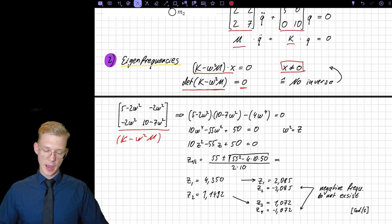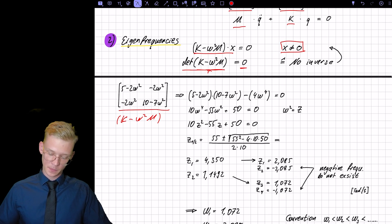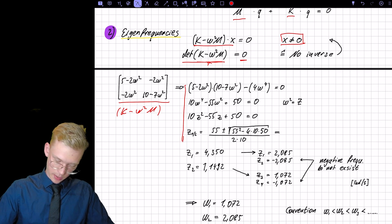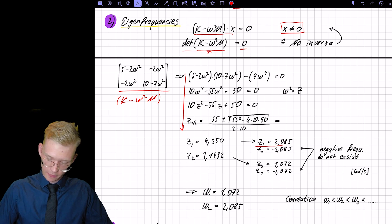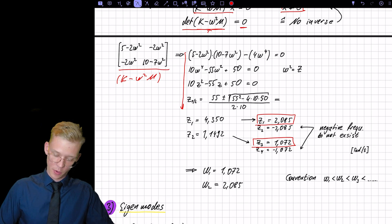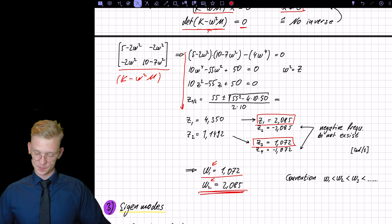So if we have this matrix, which is k minus omega m. So if we are looking for the values of omega, such that there is no inverse, we get, after a long computation, we get four solutions, but we only accept the positive ones. So we have two solutions. We have omega 1 is equal to 1.072 and omega 2 is 2.085. Notice that we don't have the square here. So this is the pure frequency. And by convention, we sort them from lowest to highest.